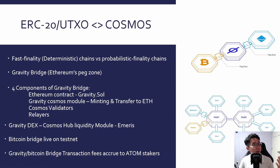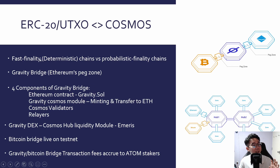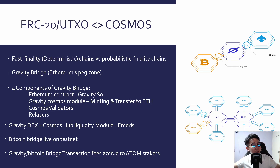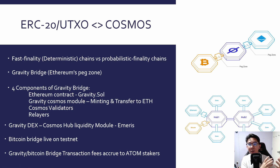Cosmos can currently only talk to IBC-enabled chains — blockchains using the Cosmos SDK that have enabled the IBC module. It can't do so for proof-of-work chains like Bitcoin and Ethereum, because of the difference between fast finality and probabilistic finality. Finality means can you confirm the state is correct? Proof-of-work blockchains usually require 6 or more blocks to confirm because there's a probability of a fork when two miners mine the same block simultaneously. Deterministic chains like proof-of-stake are final as soon as the block is mined. IBC only works for fast finality chains.